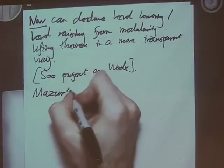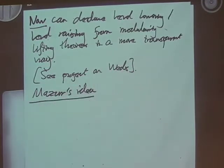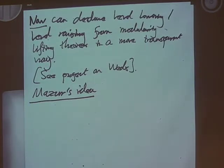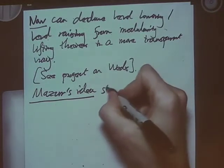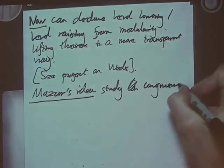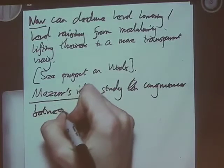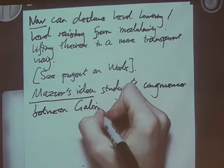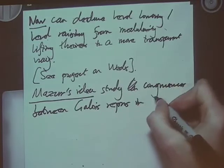Let's move on to Mazur's idea. Serre's conjecture suggested there were going to be all these congruences, nicely indexed between the modular form side and the Galois side. We know there are lots of congruences between modular forms — it was already understood that there were lots of congruences — so that means there are lots of congruences between Galois representations. So Mazur's idea was to study the congruences between Galois representations in some kind of systematic way.